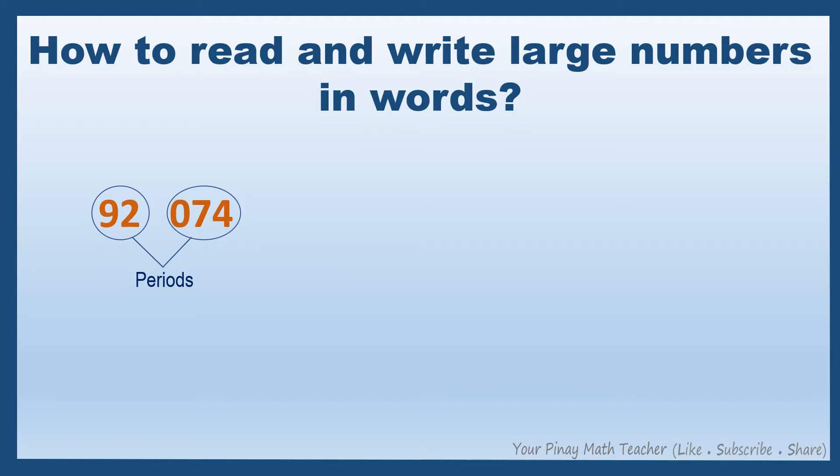In this number, the period from the left is called thousands, followed by ones. Start reading the number from left to right. And as you read each group of digits, do not forget to mention its period, except for the ones period.